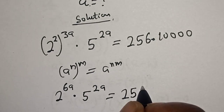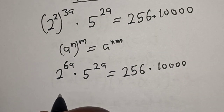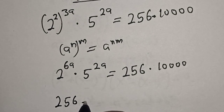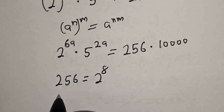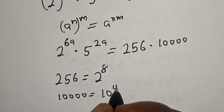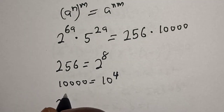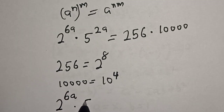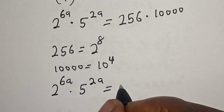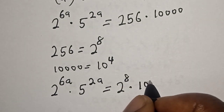256 multiplied by ten thousand: 256 is equal to 2 to the power of 8, and ten thousand is equal to 10 to the power of 4. So we have 2 raised to power 6a multiplied by 5 raised to power 2a is equal to 2 raised to power 8 multiplied by 10 raised to power 4.